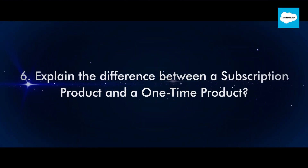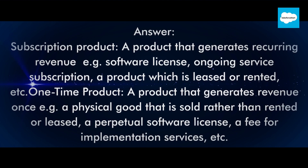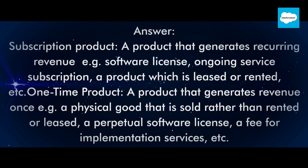Question 6: Explain the difference between a subscription product and a one-time product. Subscription product: a product that generates recurring revenue, for example a software license, ongoing service subscription, or a product which is leased or rented. One-time product: a product that generates revenue once, for example a physical good that is sold rather than rented or leased, a perpetual software license, or a fee for implementation services.